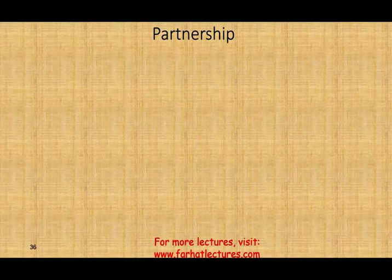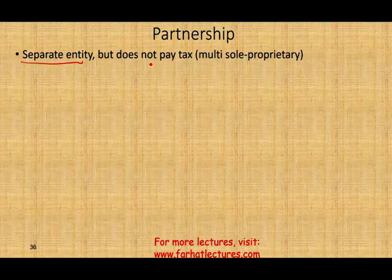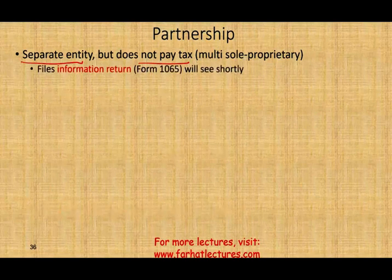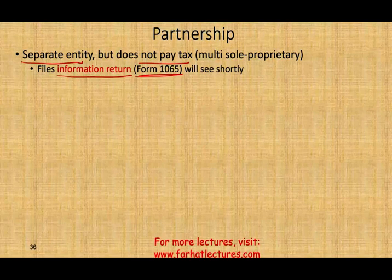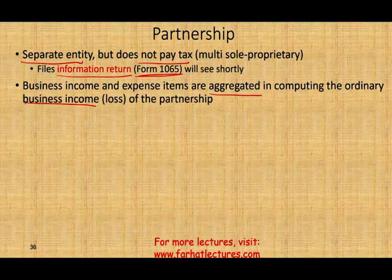The second type of business is a partnership — think of it like a sole proprietorship but with multiple owners. A partnership is a separate entity but does not pay tax. From a tax perspective, all income goes to the owners. Partnerships don't file Schedule C — they file Form 1065, called an information return. You send income, expenses, and deductions to the IRS for information purposes only; no taxes are paid at the partnership level.